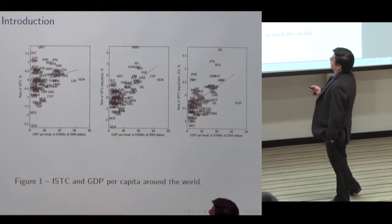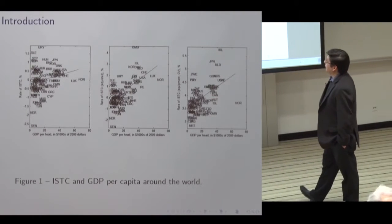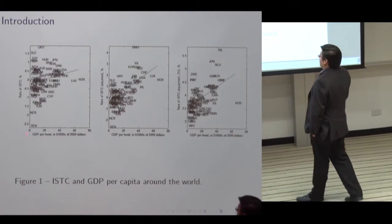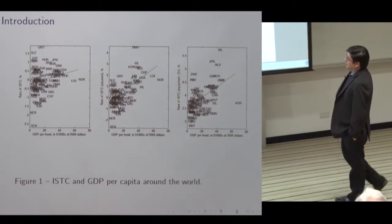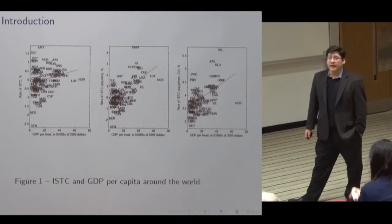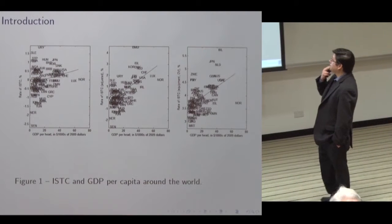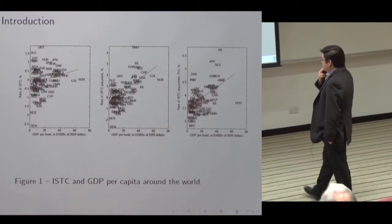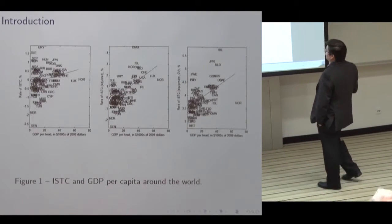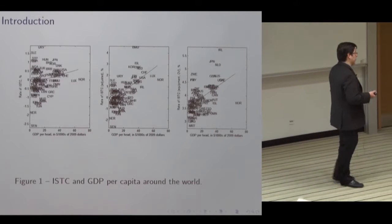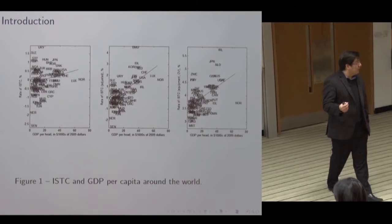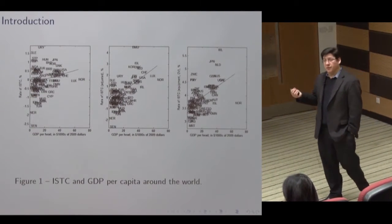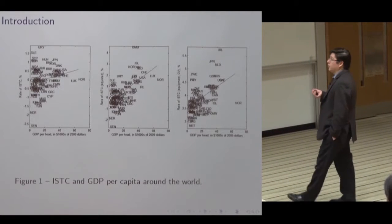On the x-axis is the rates of investment-specific technical progress, annualized, and these are three measures. On the y-axis is GDP per person in 2009. As you can see, there's a clear negative relationship here. There's a well-known paper by Hsieh and Klenow arguing that the price of capital is higher in a lot of developing countries, and that this is possibly a factor depressing the level of economic activity.